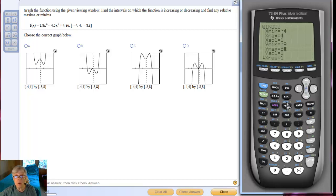Now I'm going to go to y equals and I'm going to type in my function, which is 1.8x^4. To make the cursor go back down, hit your right arrow key. There we go. Now, minus 4.5x^2, and there's a handy dandy button that does that automatically, plus 4.86. So, there we go. Now, I'm going to graph it.